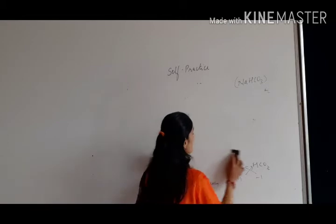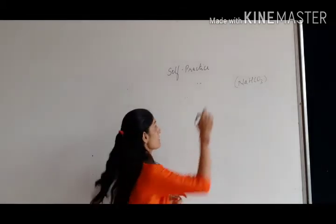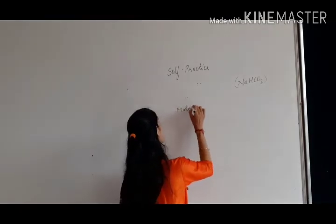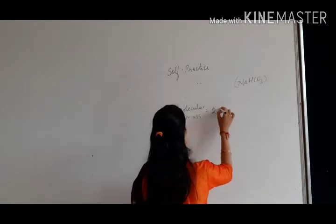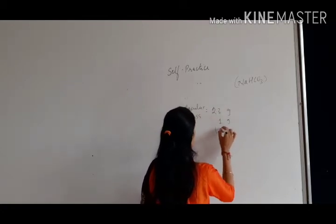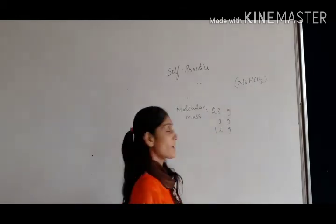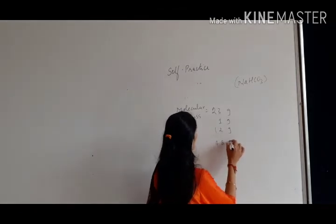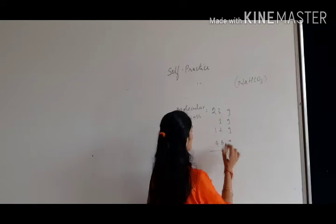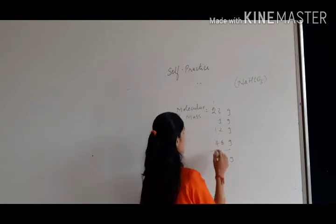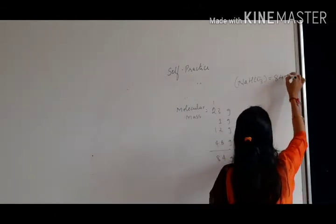Baking soda is NaHCO₃. The first step is to find out the molecular mass. Sodium: 23 grams, hydrogen: 1 gram, carbon: 12 grams, and 3 oxygen atoms: 3 into 16 equals 48 grams. So total molecular mass is 23 plus 1 plus 12 plus 48, which equals 84 grams per mole.